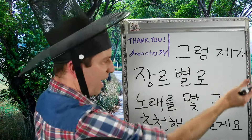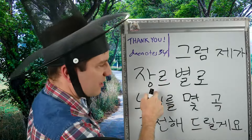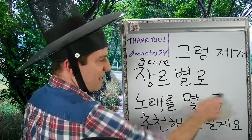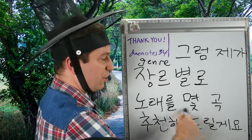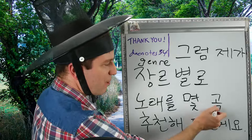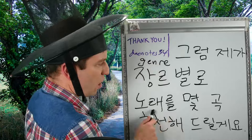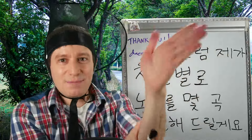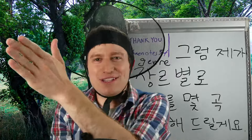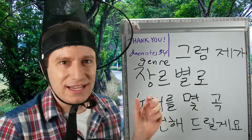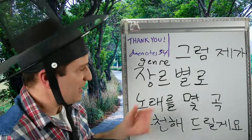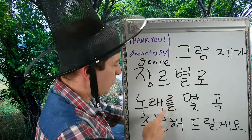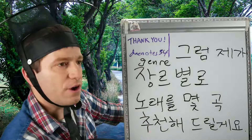그럼 — well then — 제가 추천해 드릴게요 — I will recommend. 장르 is genre. 장르별로 — for each of the different genres, you're doing this same thing that comes after. What am I going to do? 노래를 몇 곡 — a few songs. 추천해 드릴게요 — I will recommend a few songs separated by genre. So for classical music, recommend a few songs. Hip-hop, recommend a few songs. Pop, recommend a few songs. Country music, recommend a few songs. You're doing the same thing to each item in that group. 그럼 제가 장르별로 노래를 몇 곡 추천해 드릴게요 — I'll recommend a few songs for you from each genre.